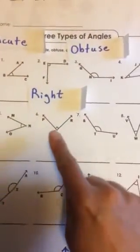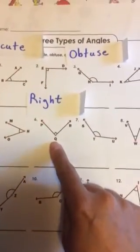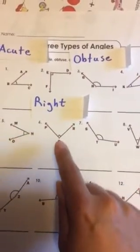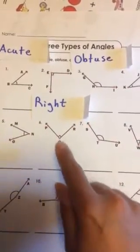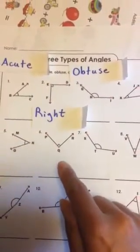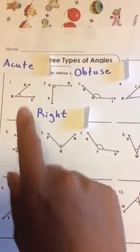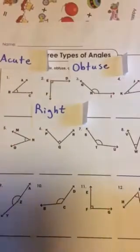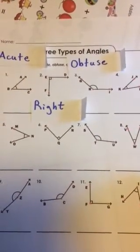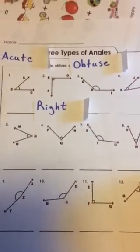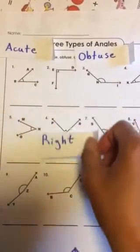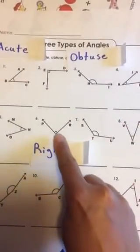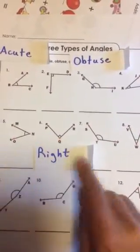Now let's look at number six — P-Q-R is its name. There's something special about number six. Is it acute, right, or obtuse? If you picked right angle, good job. You can tell because it's got that sharp corner with a little square in it.